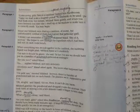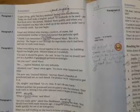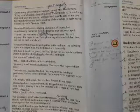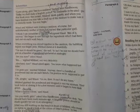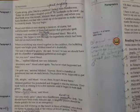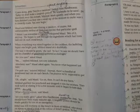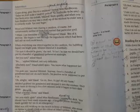Okay, come along girls, two to a cauldron, barked Miss Hardbroom. 'Barked' means when you speak very harshly or angrily. Today we shall make a laughter potion. No textbooks to be used. Put that book away this instant. Mildred, work quietly and when you have finished you may take a small sip of the mixture to make sure it is correctly made. You may begin.